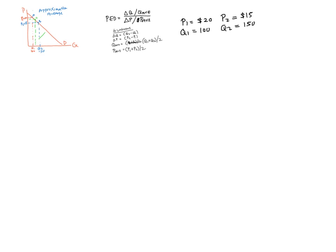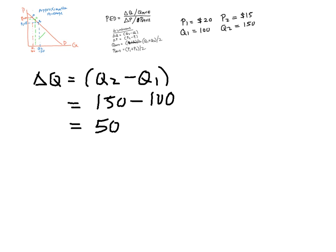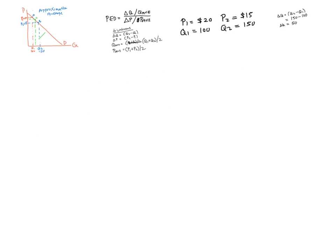So we just find our four unknowns. We find our four unknowns. Unknown number one, change in Q. Change in Q, Q2 minus Q1. Q2 is 150, Q1 is 100. Change in Q is 50. Change in Q equals 50.